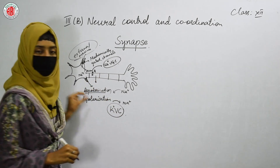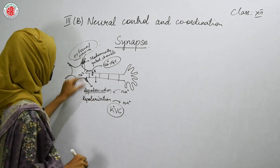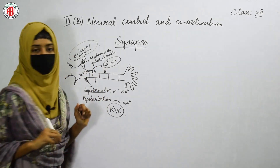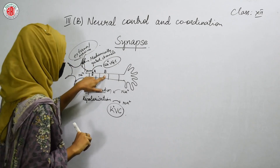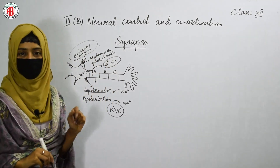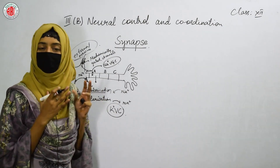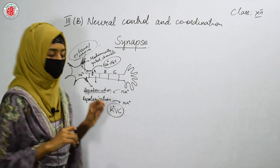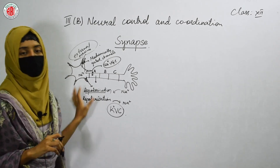At the time of repolarization of segment A, the depolarization of segment B starts. At the time of repolarization of segment B, the depolarization of segment C starts. So step by step, one by one, the segments show the reactions called depolarization and repolarization.